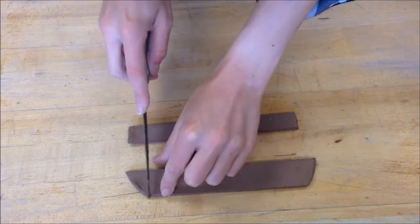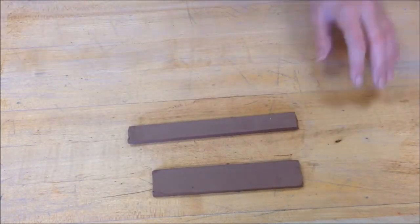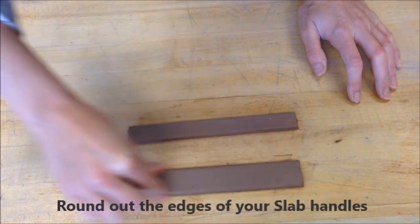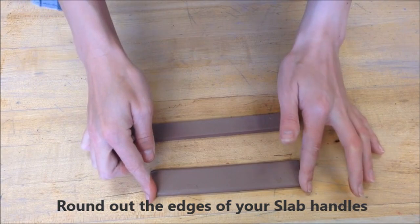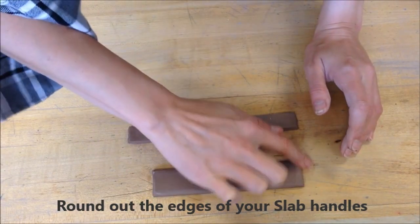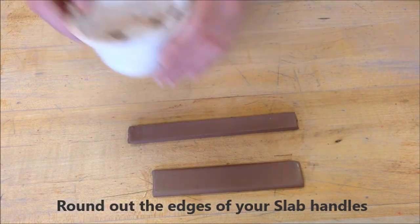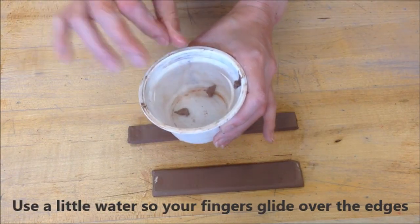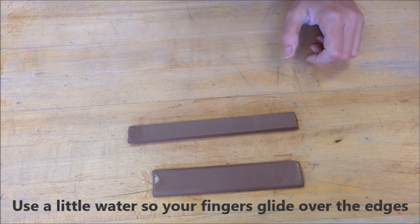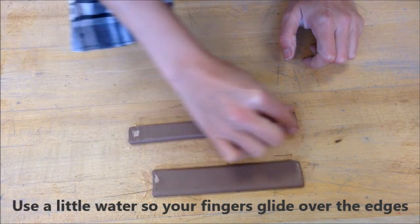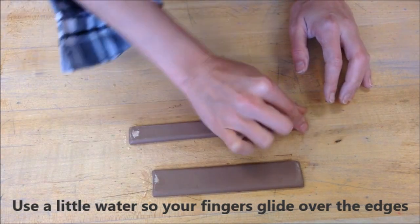Once you cut your handle shapes, you can go thick, thin, play around with different design ideas, but regardless of what design you go with, make sure you smooth down the edges of your slab. You want to round those edges out so that it's comfortable to hold in your hand. Sharp edges do not make someone want to pick up your mug.